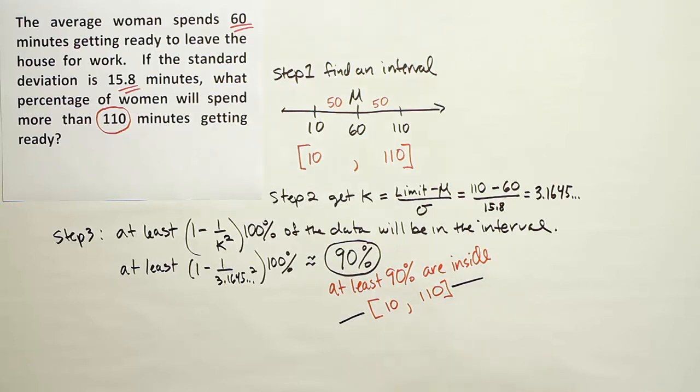We have to think about what could be outside of that. If at minimum there's 90% inside the interval, what's the most that could be outside? The answer is at most 10%. It could be zero - it could be that all the women fit between 10 and 110 minutes, because this is the minimum percentage inside the interval. It could be up to 100 inside, meaning nothing outside. If it was exactly 90, how would I know that it's 10% above 110? Maybe the other 10% get ready before 10 minutes. Maybe some people just roll out of bed and go to work in less than 10 minutes.